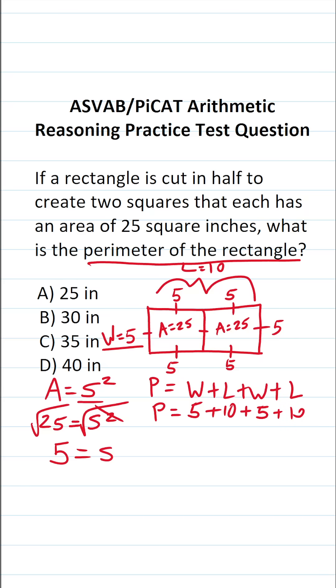To find its perimeter, all we have to do is add this up now. 10 and 10 is 20. 5 and 5 is 10. 20 and 10 is 30. So the perimeter of this rectangle is going to be B, 30 inches.